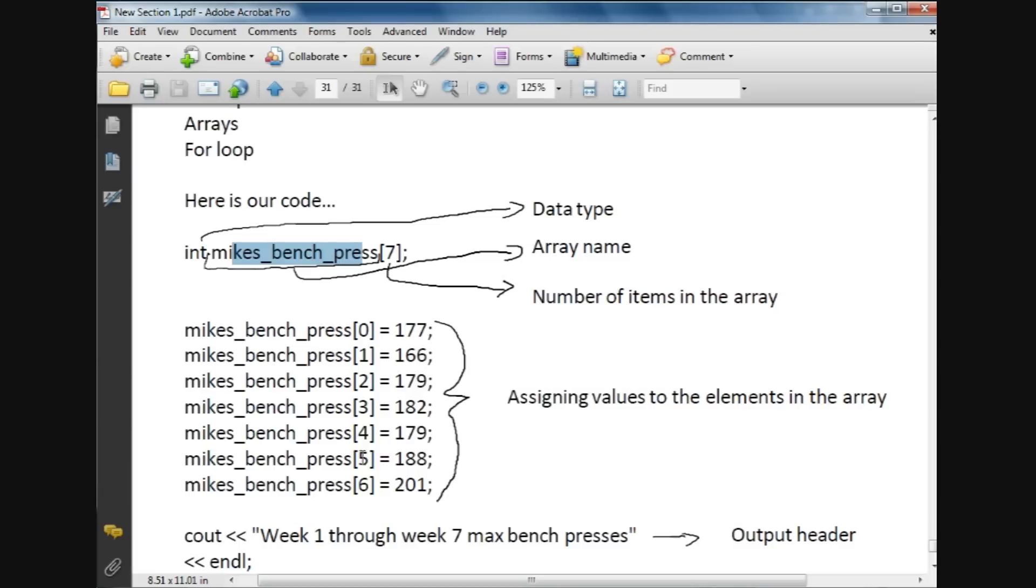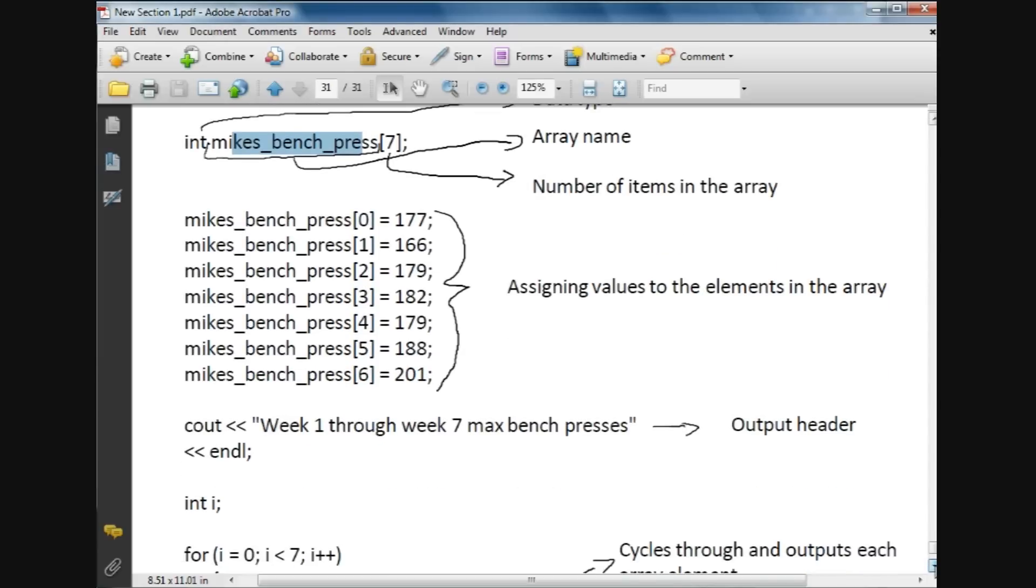Then now we're going to have an output header here, just a simple cout statement that says 'Week 1 through Week 7 Max Bench Presses,' and then we've—